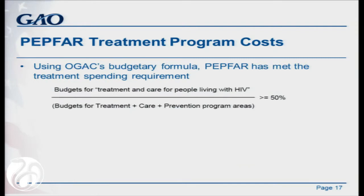Our third objective examined PEPFAR meeting its treatment spending requirement in the 2008 Leadership Act. The Leadership Act requires that more than half of the funding appropriated to PEPFAR is spent on specific elements of HIV treatment and care. OGAC's interpretation of that requirement is the budgetary formula shown on the slide, using specific budget codes in the numerator for HIV treatment and care spending, and all program area budget codes for treatment, care, and prevention in the denominator. Using that formula, PEPFAR has reported that it has met the treatment spending requirement.